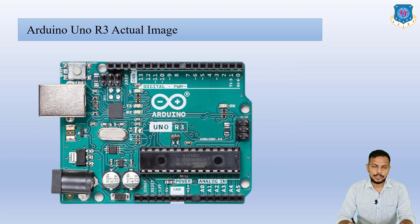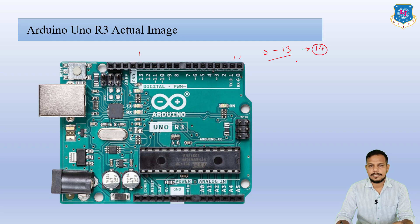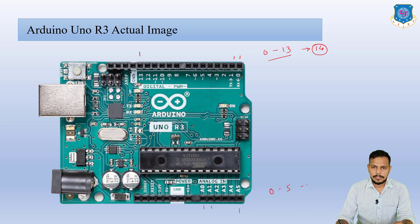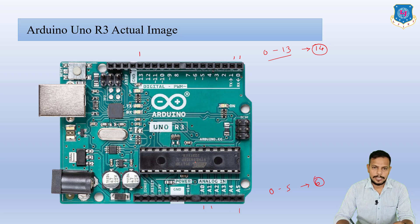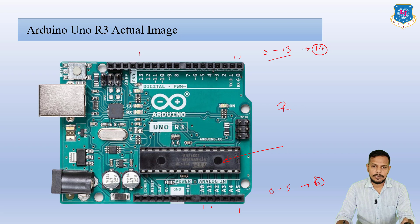Here you can see the actual image of Arduino Uno. Pins start from 0 and move towards 13, so basically there are 14 digital pins in Arduino Uno R3. There are also analog pins A0 to A5, meaning there are 6 analog pins. The ATmega328 microcontroller is in the center. Remember, this is Uno R3 because it is the third version.